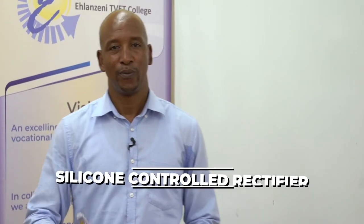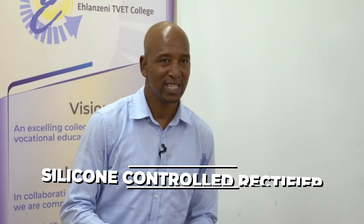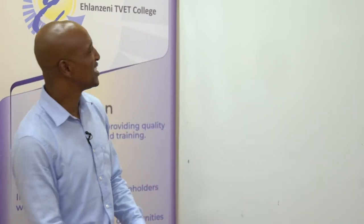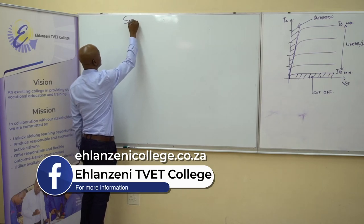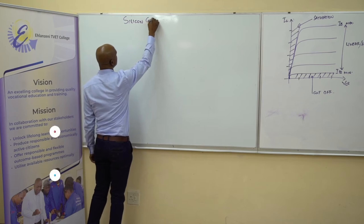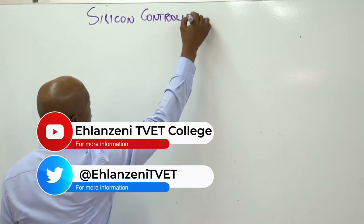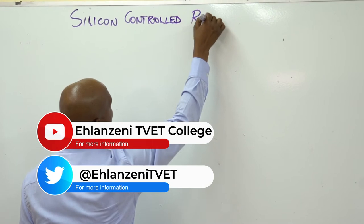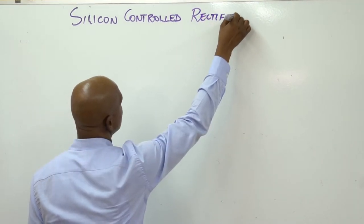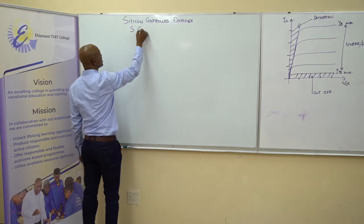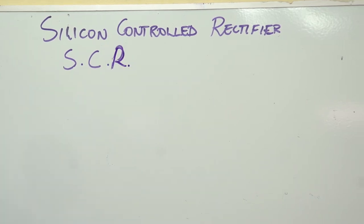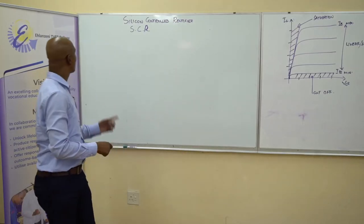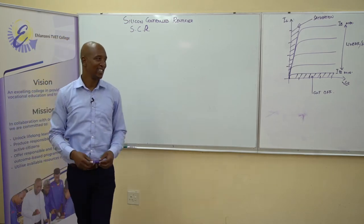Our topic today is still on the fundamentals of electronics, but the module is what we call the Silicon Controlled Rectifier. It should be abbreviated as SCR — not SRC. Silicon Controlled Rectifier. It's simple.